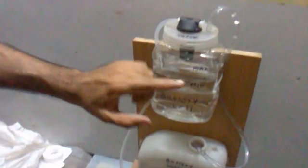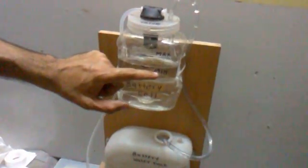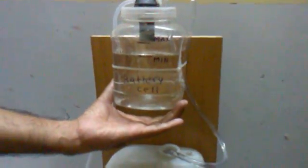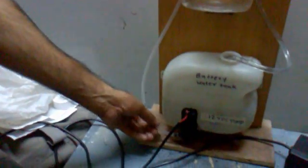This is the battery cell. This is the maximum level. This is the minimum level. It is written as battery cell. You can treat it as one cell of a lead acid battery.